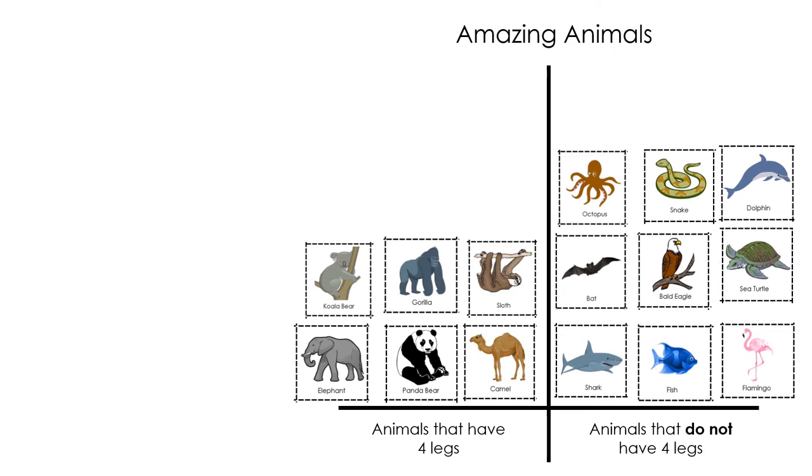How many animals have four legs? There are six. How many animals do not have four legs? Did you say nine animals?